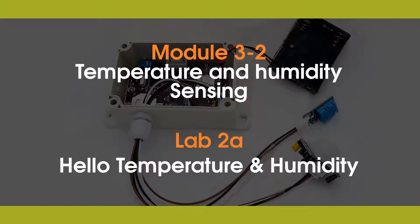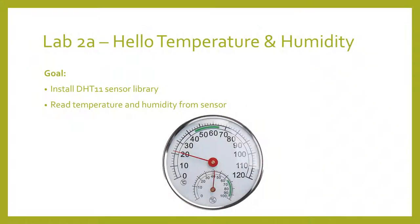We're going to start off with Lab 2A, Hello Temperature and Humidity. This is an introductory lab to ease us into working with our temperature and humidity sensor. Now we're moving on to sensing our environment. Two basic measurements that we're constantly concerned about are temperature and humidity. Although many of us are familiar with temperature, not as many are familiar with humidity. Humidity is a measure of the water vapor in the air, and there are two ways to measure it.